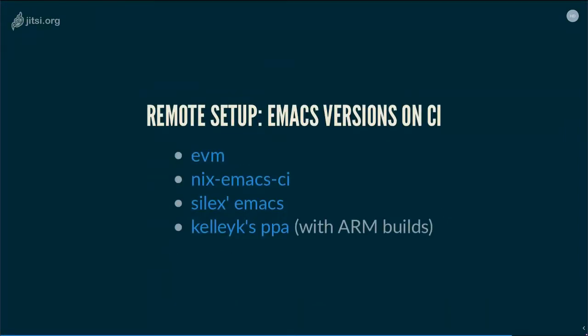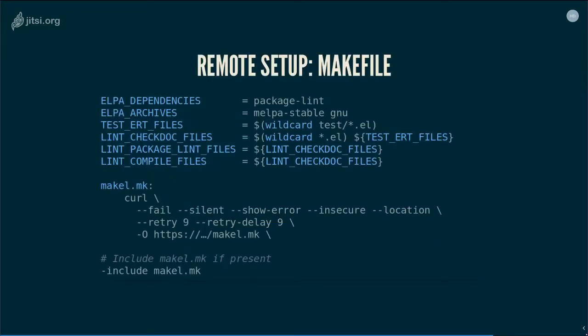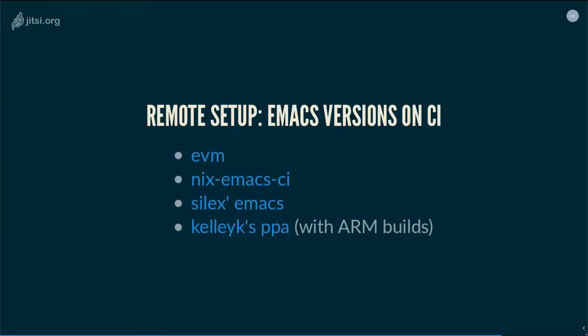You also need to install the Emacs version you want to test against on your CI server. I list four solutions: EVM is the older, well-established one that has helped many people install multiple Emacs versions. Nix-emacs-ci is newer and is based on the Nix package manager. There are Silex Docker images with Emacs, and there's a PPA for Ubuntu which has the advantage of providing ARM builds — useful if your CI server runs on ARM. I'll demonstrate the last three: nix-emacs-ci, Silex, and the PPA.